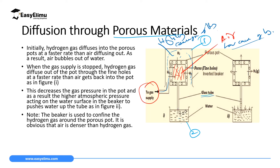Hydrogen outside the porous material is at high concentration, while inside there is low concentration. Hydrogen diffuses from outside into the inner part. We observe this by watching the water level: the water in the glass tube decreases and bubbles of gas escape, meaning the hydrogen diffusing inside has pushed the air that was inside out. When we remove beaker one, the concentration gradient reverses — now there is high concentration of hydrogen inside and low concentration outside.